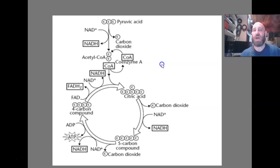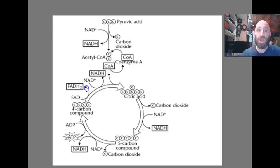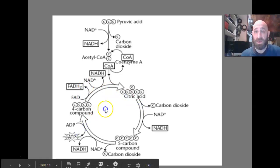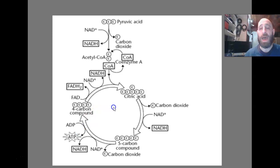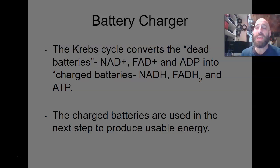This image shows the process: pyruvic acid goes in, gets converted to acetyl-CoA, then joins the citric acid cycle where it forms a six-carbon sugar again and slowly gets broken down, losing carbon until it returns to its original form. In the process, it charges batteries: it charges NAD into NADH, FAD into FADH2, and ADP into ATP. The whole point of the Krebs cycle is to act as the battery charger — charging batteries so they can be used in the next process.